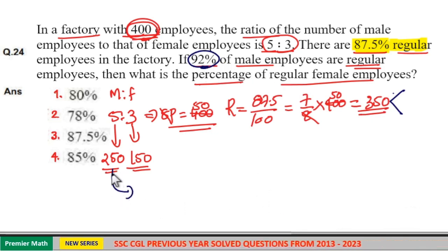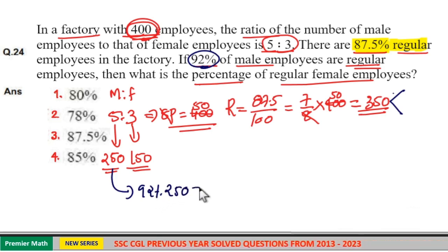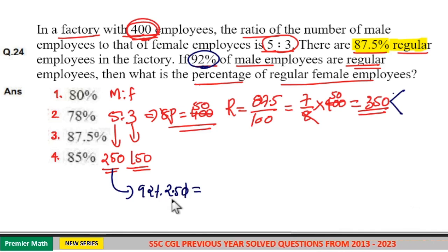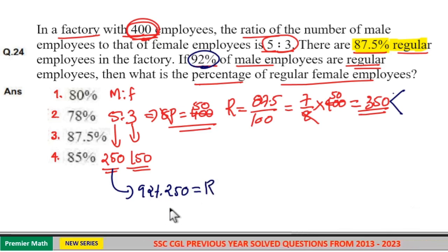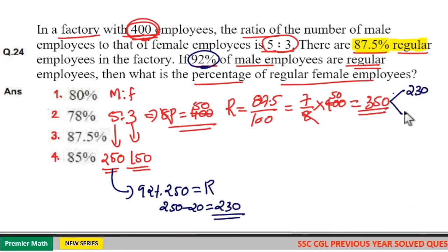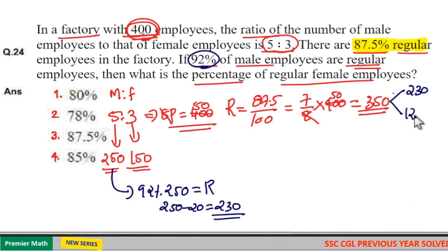Total number of men is 250. 92% of 250 means subtracting 8% from 250. 10% of 250 is 25, so 1% is 2.5, and 8% is 2.5 × 8 = 20. So regular male employees = 250 − 20 = 230. Out of the 350 total regular employees, 230 are regular men, so the remaining 120 are regular women.